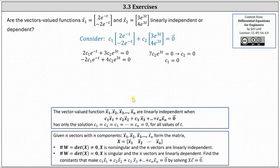The vector equation only has the solution c1 equals c2 equals zero for all values of t, indicating the two vector valued functions are linearly independent.